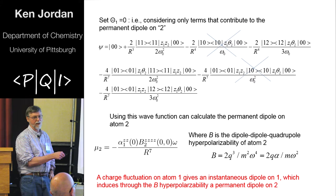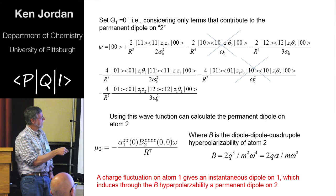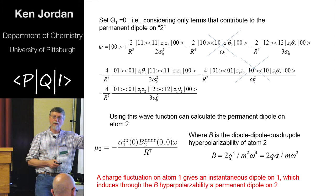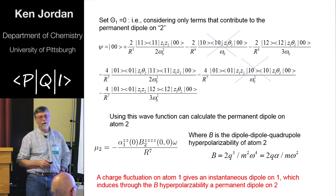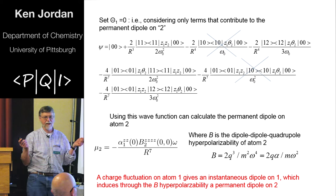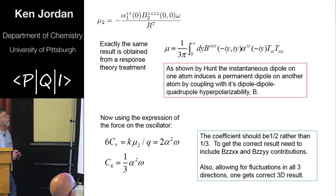If you work that out, you get the following result here, which you would also get from doing a response treatment, that the dipole on atom two is the polarizability on atom one, that's where the initial fluctuation occurs, times the ZZZ component of the dipole-quadrupole hyperpolarizability. So there's your expression for the dipole. It goes as one over R to the seventh, which is exactly what Feynman had indicated.